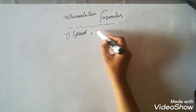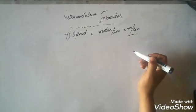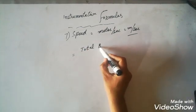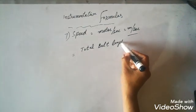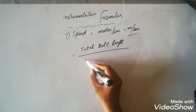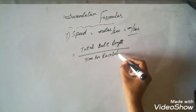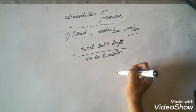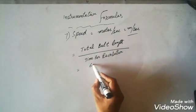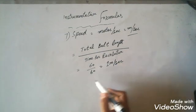The seventh formula is how to calculate the speed of a weigh feeder belt in meter per second. The formula is: Speed = Total belt length / Time per revolution. We measure the total belt length and check how much time it takes to complete one revolution. Suppose total belt length is 60 m and time per revolution is 60 seconds, then speed = 60/60 = 1 meter per second.